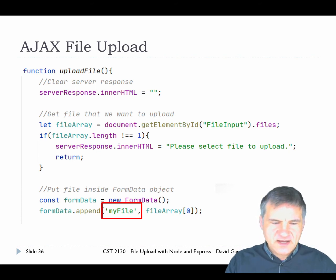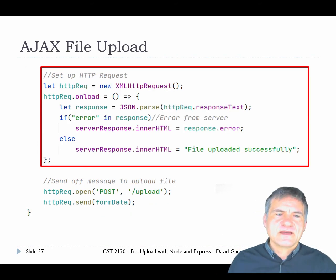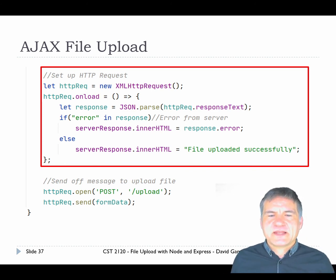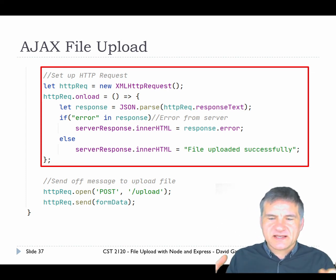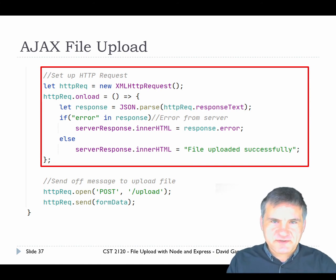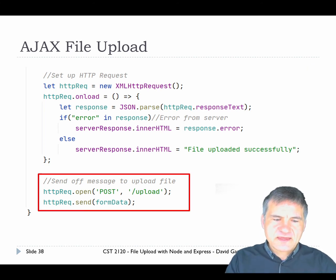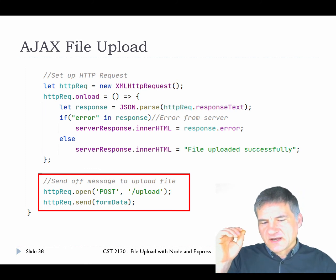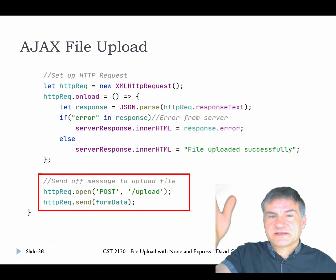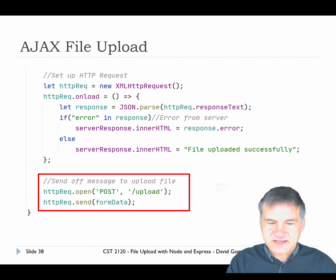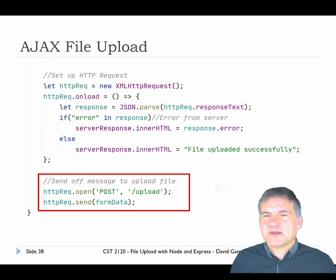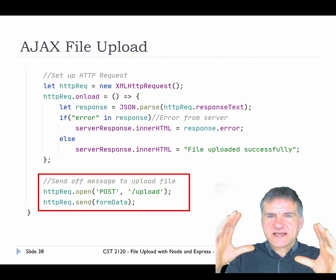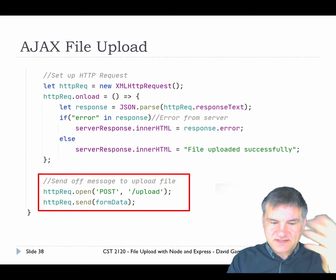We create the FormData, add 'myFile' with the file array entry, then create the XMLHttpRequest. We set up handling so it says 'file uploaded successfully' or puts the error into the user feedback area. Then we call open with POST to the slash upload path on the server, and send the FormData object as the argument to the send method. That FormData can just be sent directly as the argument — it's really pretty simple.